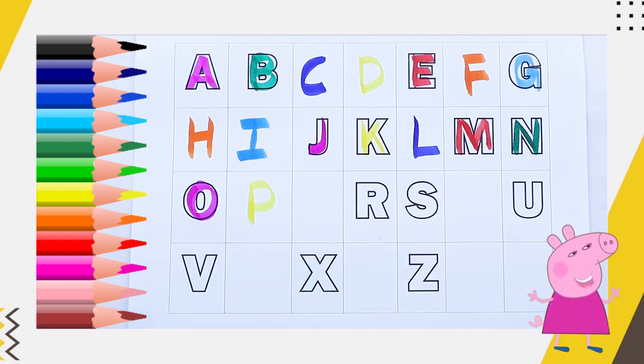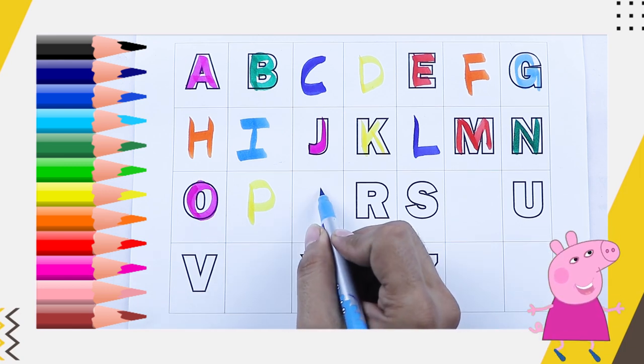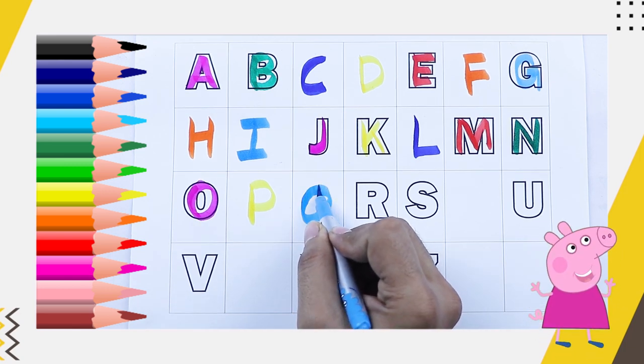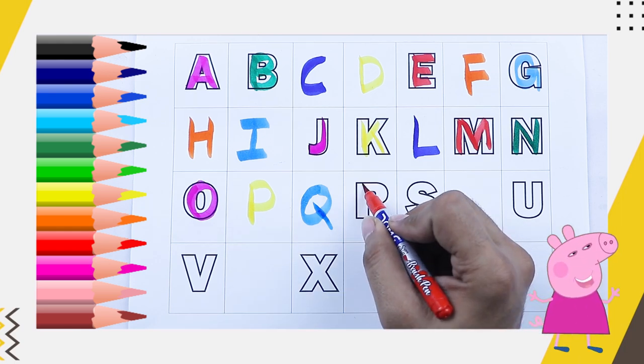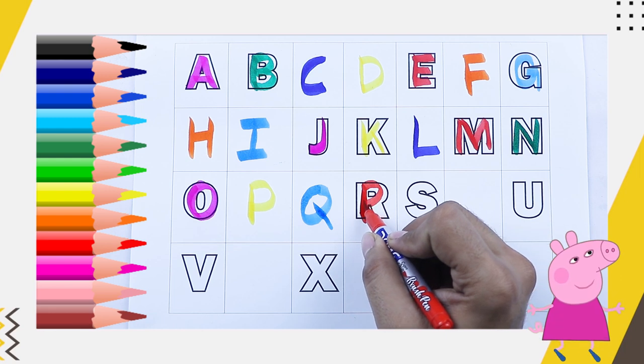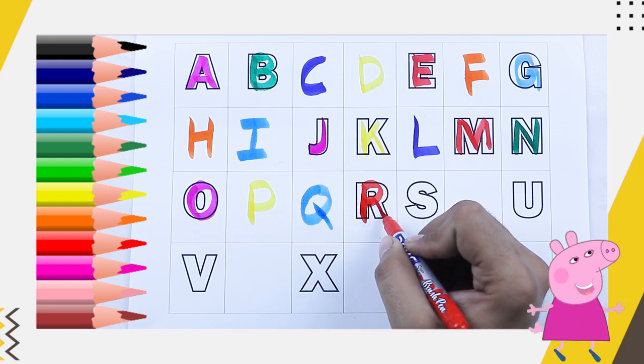What is the next? Capital Q, Q for queen. R, red color, R, R for rabbit.